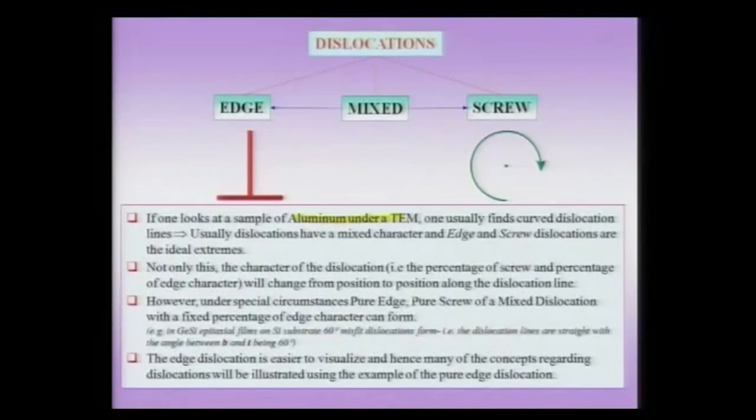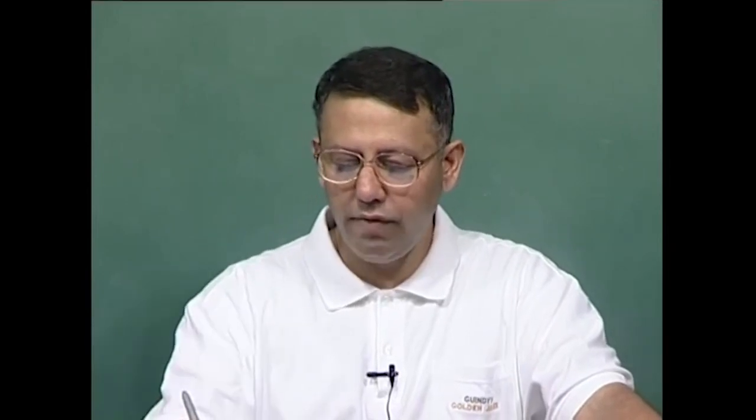In fact, there is a structure to all these dislocations — there could be dislocation cells which form, there could be regions of high dislocation density and regions of low dislocation density as well. Essentially, all these dislocations will typically have a curved line; they will not be straight dislocations. In other words, these dislocations have a mixed character — they do not have a pure edge or a pure screw character, but actually a mixed character.